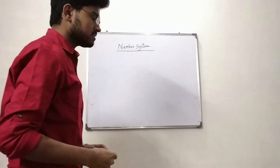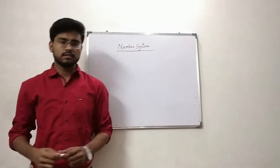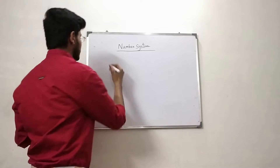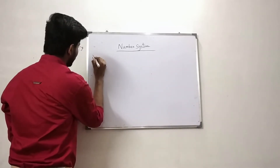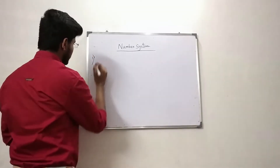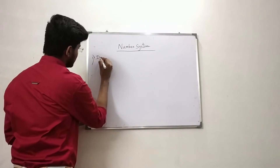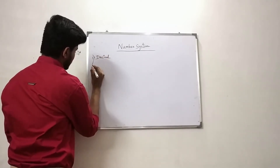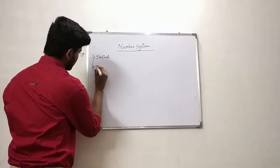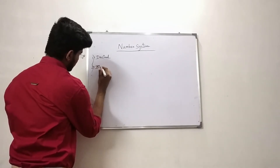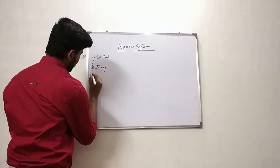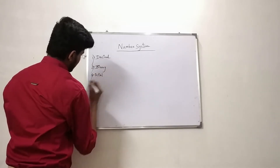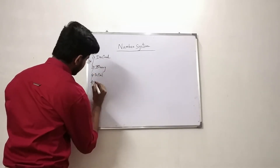In your class 12 syllabus, we have already known that there are 4 types of number system. And they are: decimal number system, binary number system, octal number system, and hexadecimal number system.